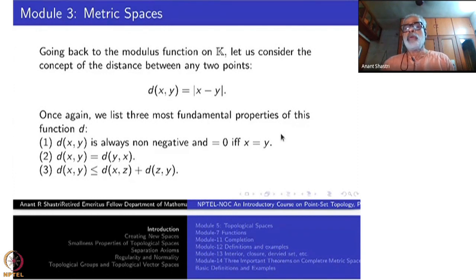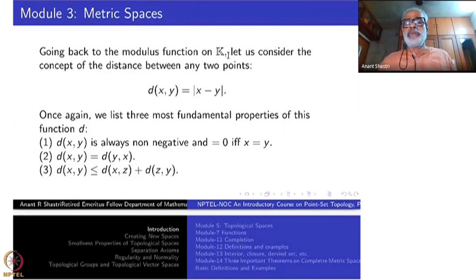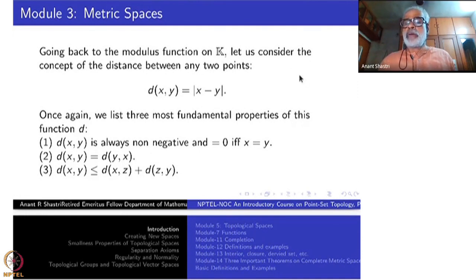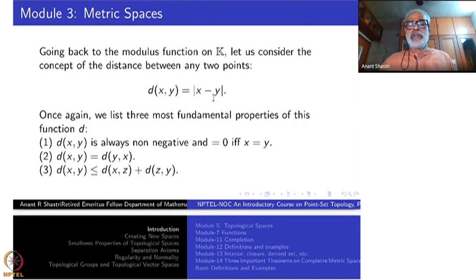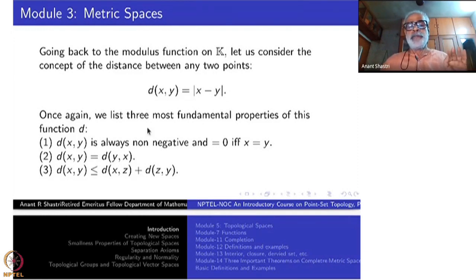Today we are going to take one more step towards generalization. We go back to the modulus function on k — where k denotes either the set of all real numbers or complex numbers. Take the distance function d(x,y), where x and y are elements of k, to be the modulus of x minus y. Inside the real numbers or complex numbers, this coincides with the standard notion of distance — the distance function.